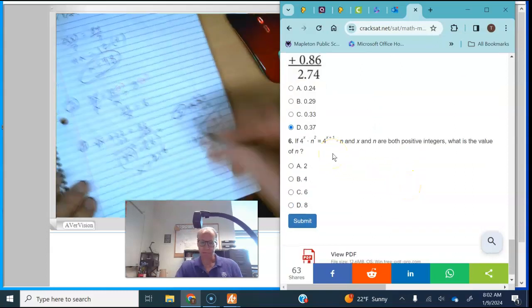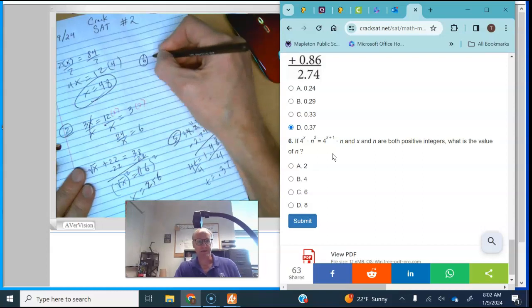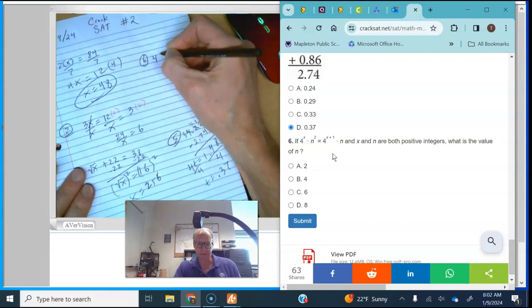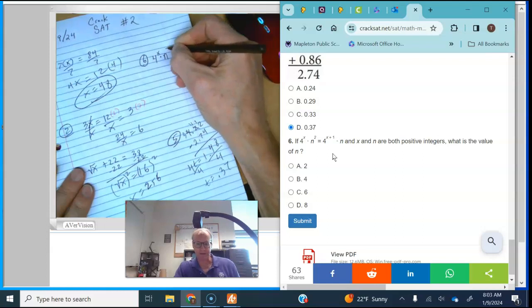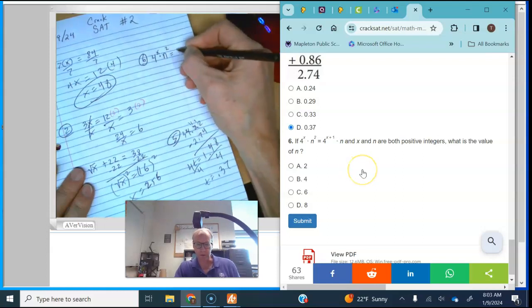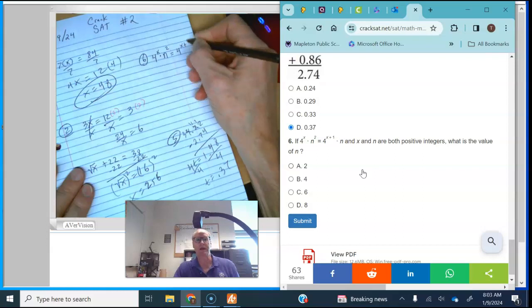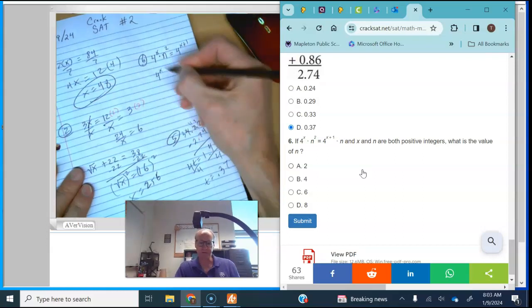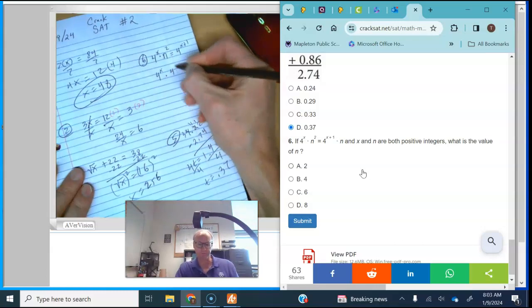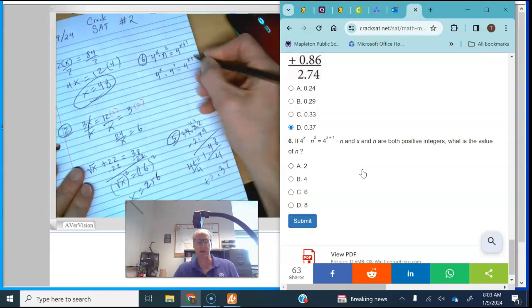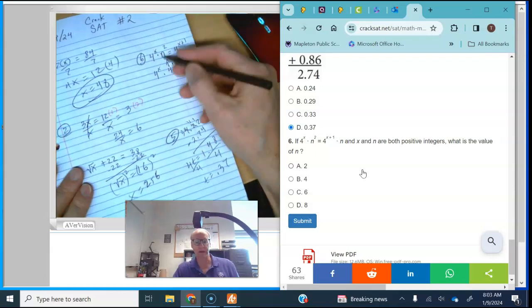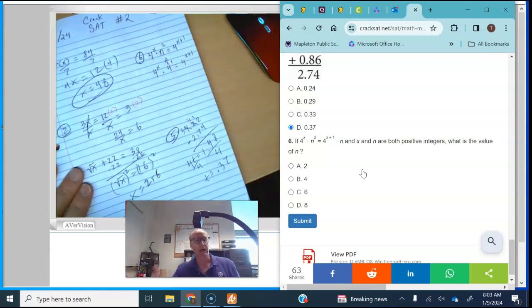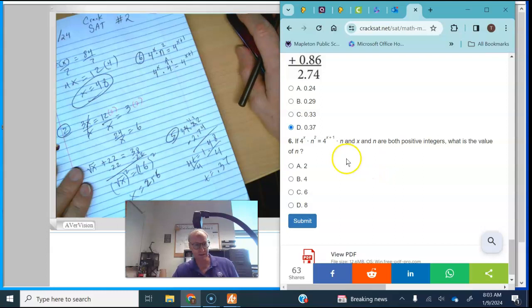Last one. This is number six. And it says, if 4 to the x times n to the second equals 4 to the x plus 1. Well, hopefully you know that 4 to the x times 4 to the first is equal to 4 to the x plus 1. Then we know that n squared equals 4. And you should know what that is. Of course, we're talking about 2.